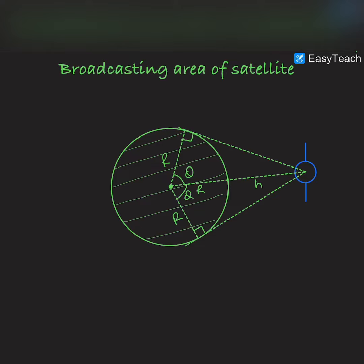We can say that this angle is 90 degrees and this angle is theta, so cos theta will be equal to base upon hypotenuse. So base is r and hypotenuse is r plus h, where h is the height of the satellite from the surface of the Earth.